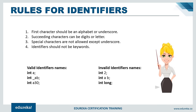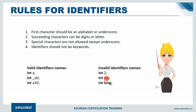Examples of valid identifiers: integer a (no special symbols or numbers at start), _ab (underscore is the only special symbol allowed), and a name starting with an alphabet followed by numbers. Invalid identifiers include: starting with a number, including a space within the name (use underscore instead), or using a keyword such as long as an identifier name.